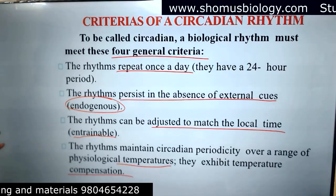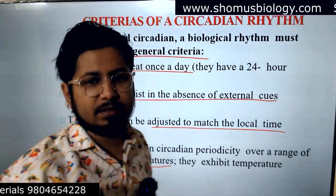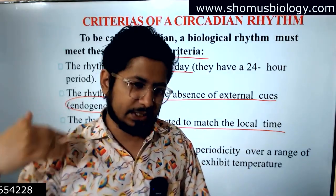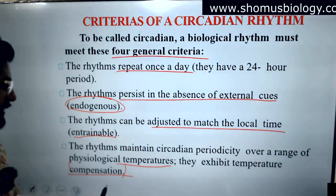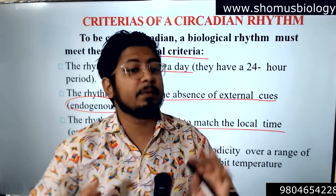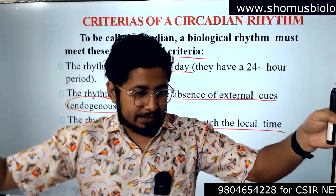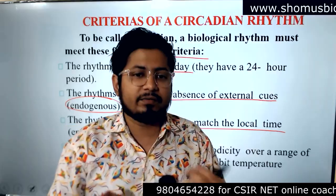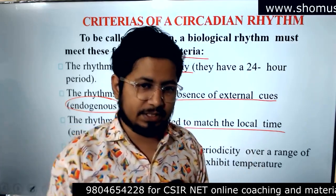Temperature compensation means the rhythm maintains circadian periodicity even when the environmental temperature is altered by several degrees. Even if you check at 2 or 5 degree Celsius different temperature gaps, the rhythm will still be maintained. Because the rhythm always tries to be entrainable, it manages changes in environmental temperature — that is known as compensation of change in temperature.